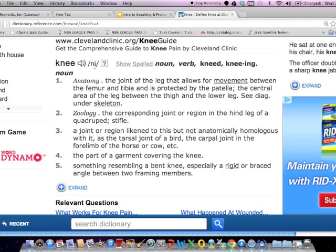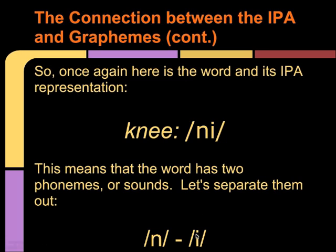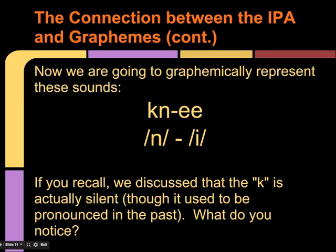We can see the IPA spelling listed here. Here is the word and its IPA representation as we see on the screen. This means that the word has two phonemes or sounds. Let's separate them out: N-E. Now, we are going to graphemically represent these sounds.